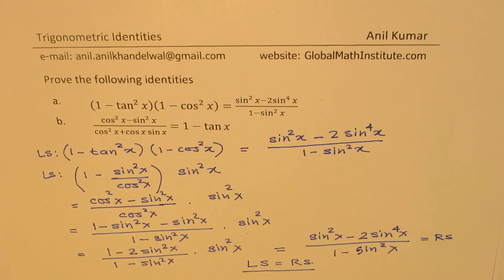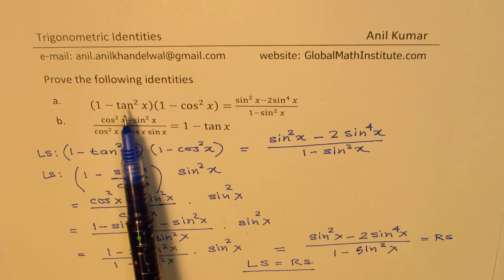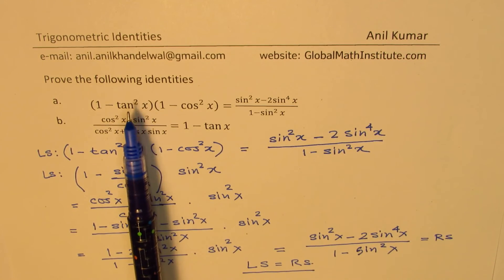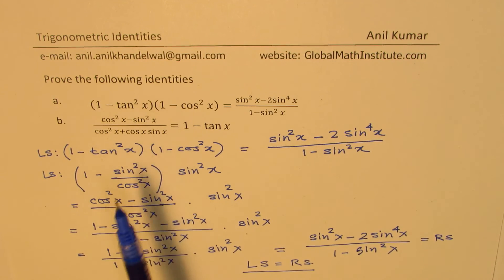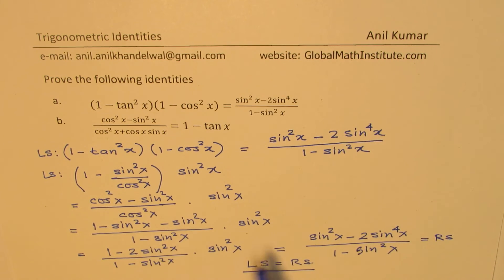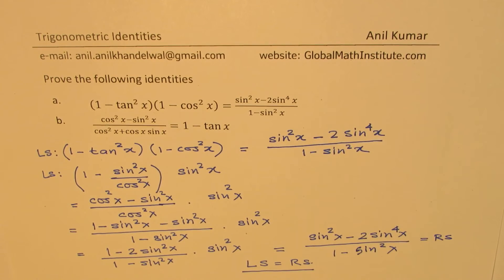So we have shown that the left side equals the right side. I hope the steps are absolutely clear. The strategy was to write these terms in terms of sin and cosine first, then into sin terms, and then match the left side with the right side.